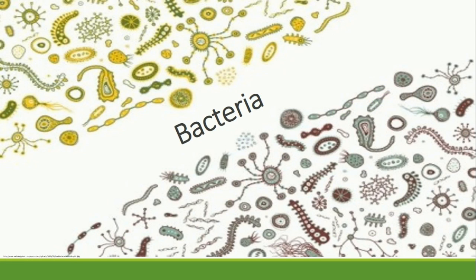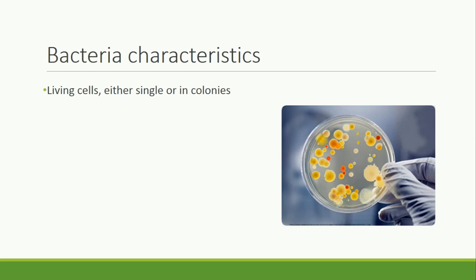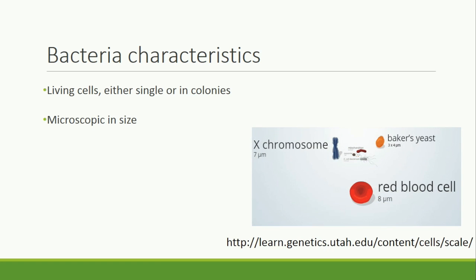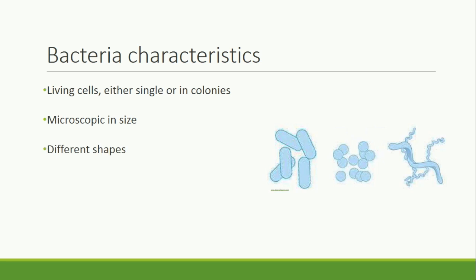First up, bacteria. Bacteria are made up of living cells, either in single cells or grouped in colonies, as you see in this petri dish. Cells are microscopic in size, typically ranging from 0.5 to 5 micrometers. Check out this website for an interactive comparison of sizes. Bacteria come in different shapes. The three most common are bacilli, which are rod-shaped; cocci, which are round; and spirilla, which are spiral-shaped.